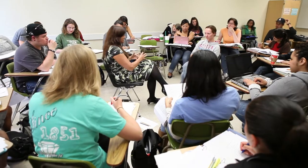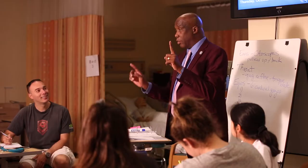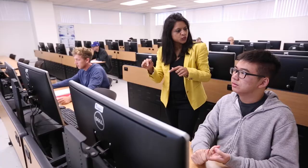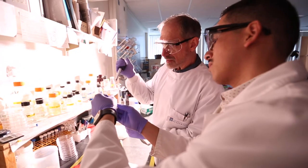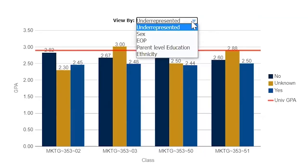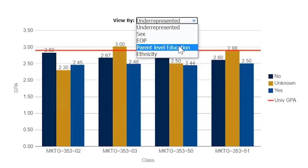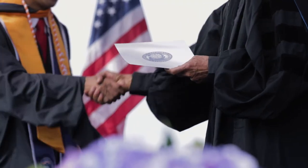Another function of the Dashboard is to help faculty create inclusive and equitable learning opportunities for their diverse students. By providing demographic data such as underrepresented status, parent education level, and ethnicity, faculty can identify disparities and create a pathway for social mobility.